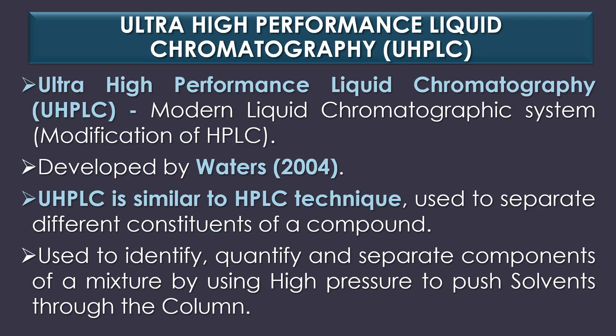Ultra high performance liquid chromatography, or UHPLC, is a modern liquid chromatographic system which is the modification of HPLC. UHPLC was developed in 2004 by Waters. UHPLC is similar to the HPLC technique, used to separate different constituents of a compound. UHPLC is used predominantly to identify, quantify and separate the components of a mixture by using high pressure to push solvents through the column.